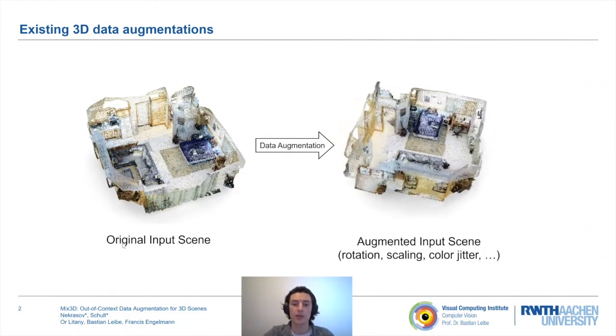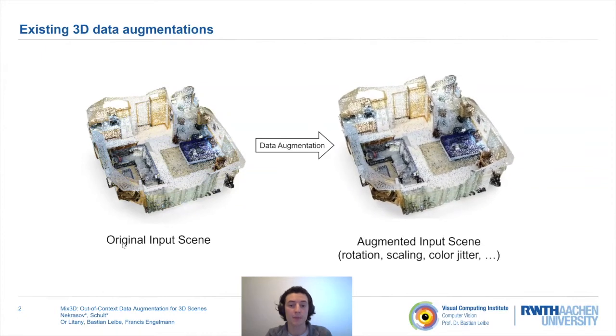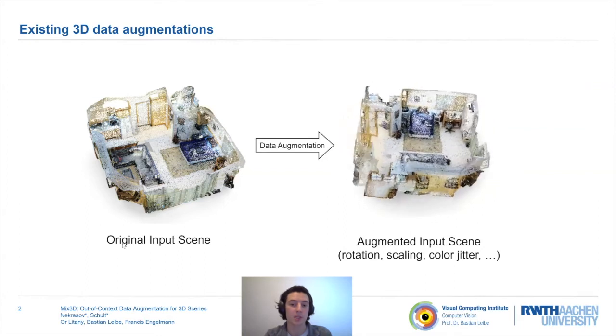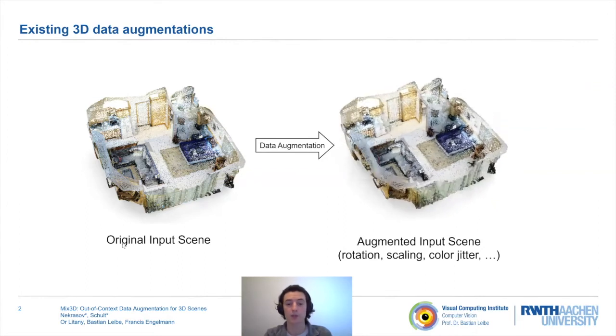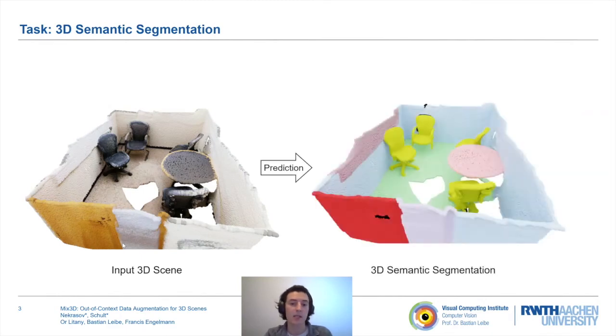During training of neural networks, data augmentation is commonly used to prevent overfitting. Existing 3D data augmentation techniques include transformations such as rotation, scaling, or color jitter. For 3D scene understanding tasks such as semantic segmentation, these data augmentation techniques preserve the context of a scene, that is, co-occurrences and spatial arrangements of objects.